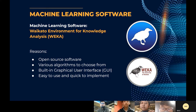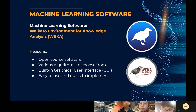The machine learning software we use is Weka. It is an open-source software that provides tools for data preprocessing, implementation of several machine learning algorithms, and visualization tools, together with a graphical user interface, so we can develop machine learning techniques and apply them to real-world data mining problems. It is free software licensed under the GNU General Public License. We chose this software because we learned it in class — it is easy to use, quick to implement, and has many algorithms to choose from.